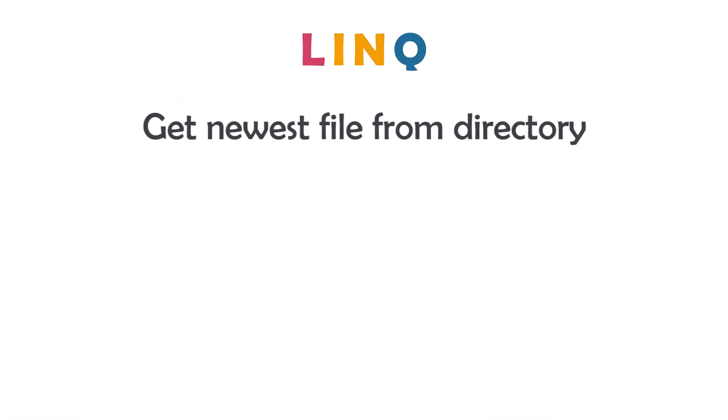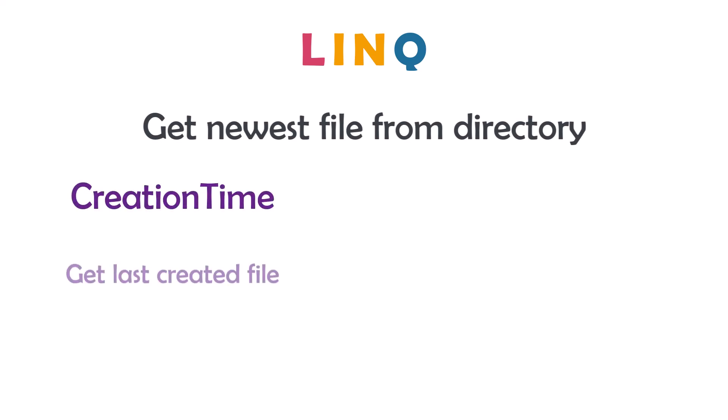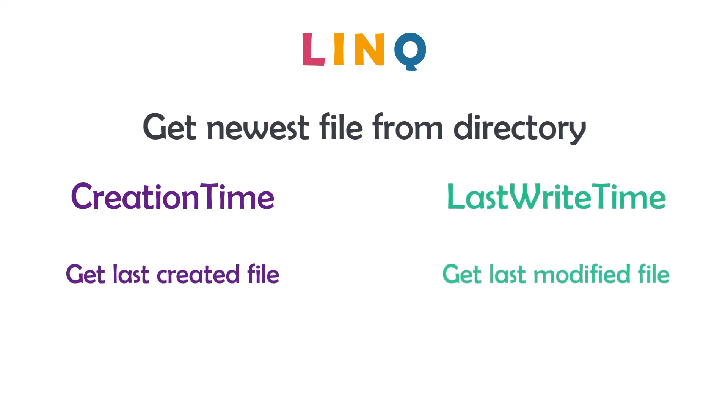This is how to define a directory and read files from it. Now we can start with the LINQ query. As mentioned, I want to get the newest file from a directory. We can do that using the CreationTime — to get the last created file — or using the LastWriteTime, which means I want to get the last modified file. I want to get the last modified file, so I will use the property LastWriteTime.